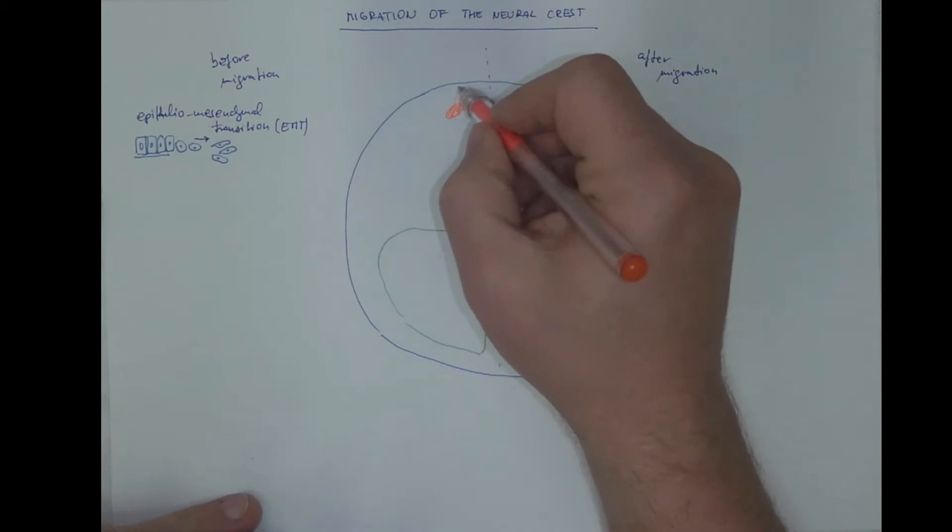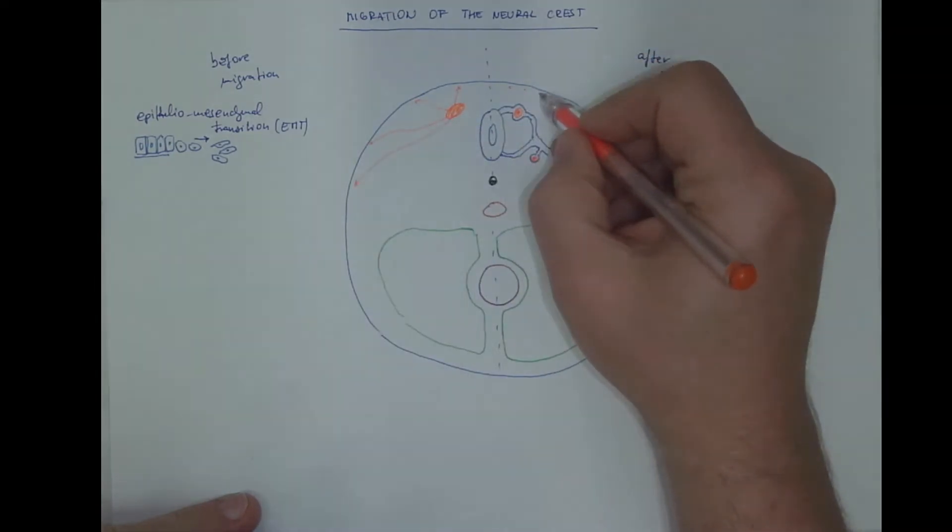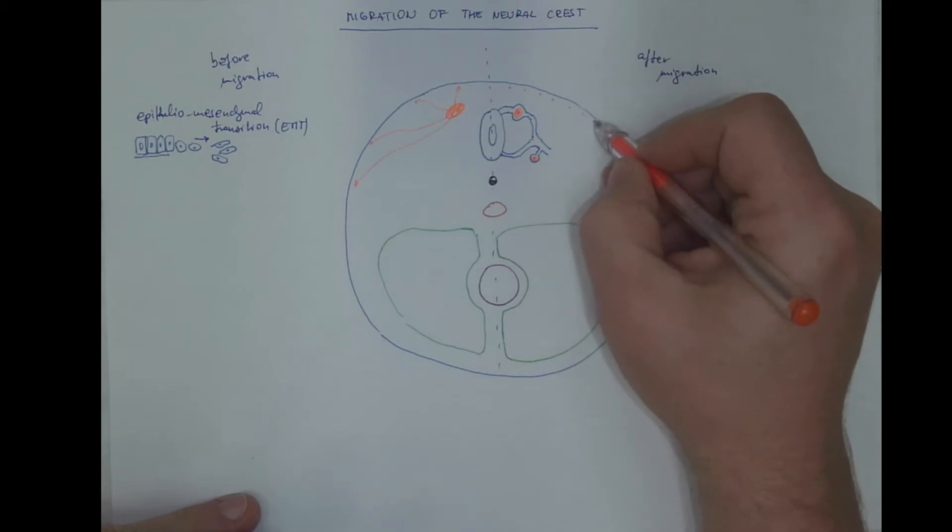Some cells will migrate to the dermis and epidermis, and they will become the pigment cells of human skin, the melanocytes.